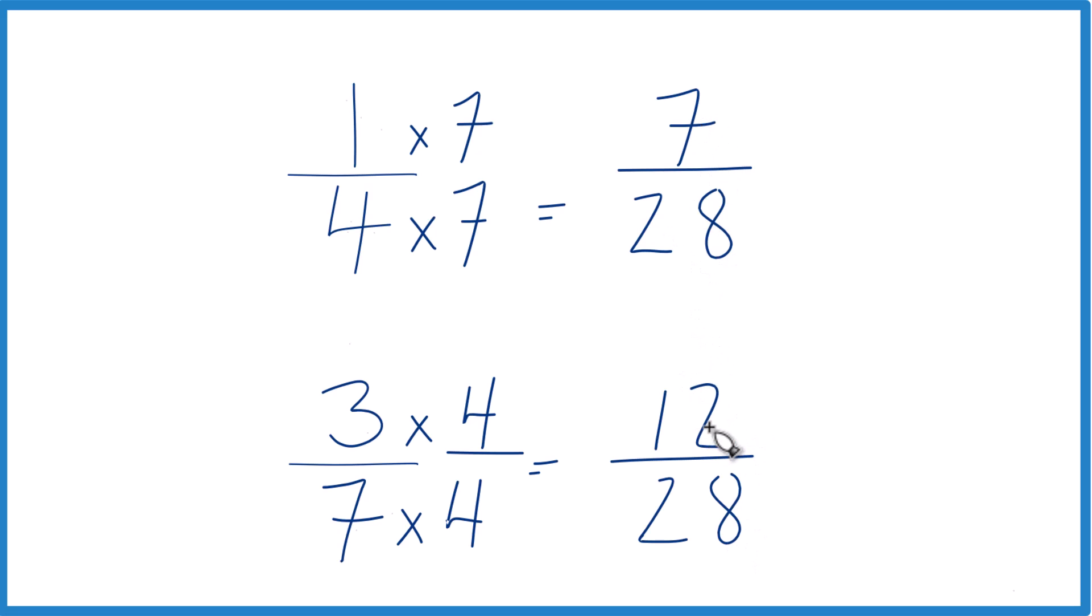Just compare the numerators. 12, that's greater than seven. So 12 twenty-eighths is greater than seven twenty-eighths. And since these are equivalent and these are equivalent, three-sevenths, that's greater than one-fourth.